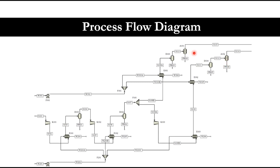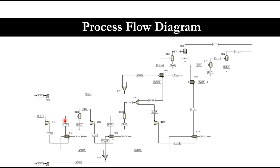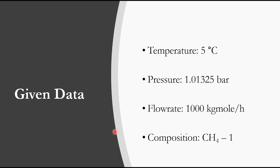In Aspen Plus, the multi-stage compression module accounts for the compressor and the heat exchanger, but it does not take into account flash separation. So you either need to install that separately, or you can make the flowsheet another way. Now, we have been given the feed conditions to work with.